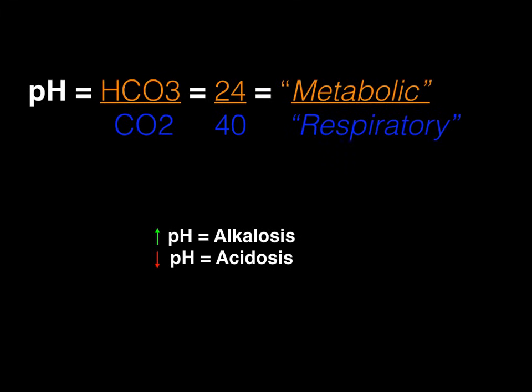When pH goes up and it's greater than 7.40, we call that an alkalosis. Likewise, when the pH goes down and it's less than 7.40, we call that an acidosis. Everything that you need to memorize is right here on this slide — stare at it for a couple minutes and you'll be ready to go.